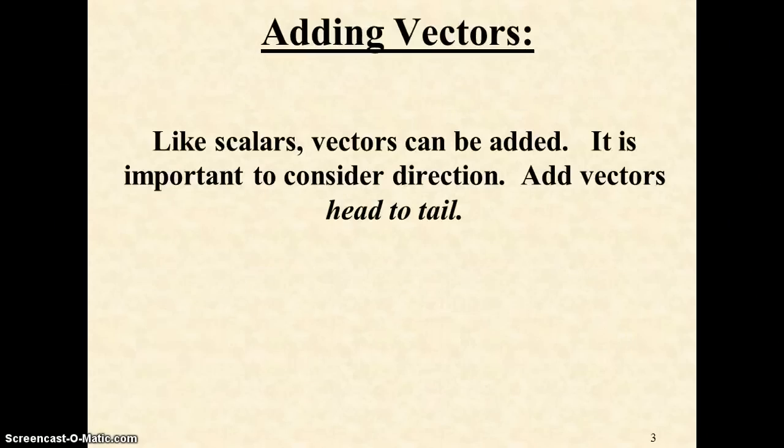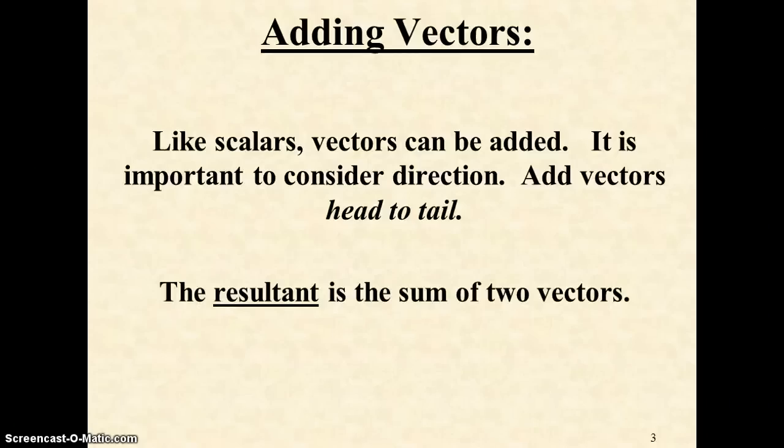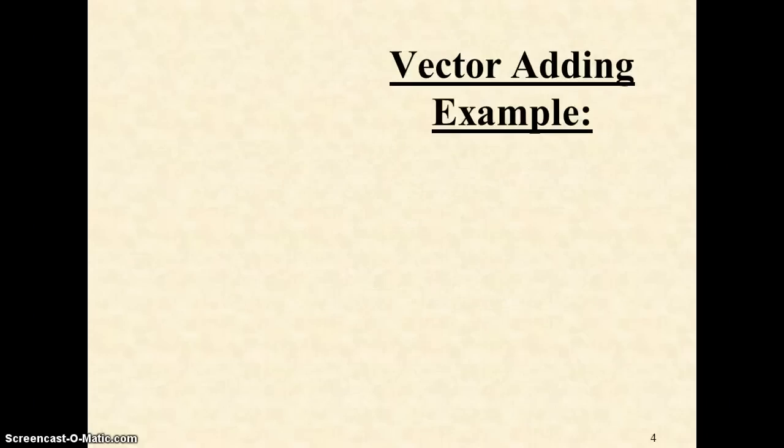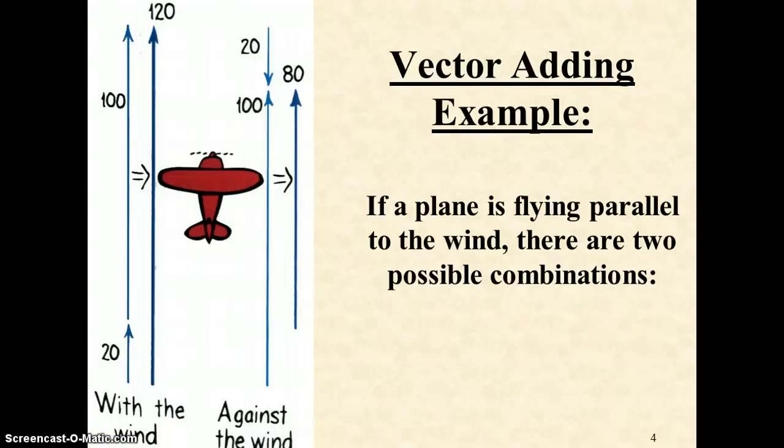When vectors are added, you need to add them head to tail. If you're representing them by arrows, you're literally taking the head of one arrow and putting the tail to the next one. When we add up two vectors, we call them a resultant. If we take an example of a plane flying parallel to the wind, you have two combinations: flying with the wind or against it. Notice if I put the tail on the tip of the other vector, when they're in the same direction, we get an overall velocity vector of 120.